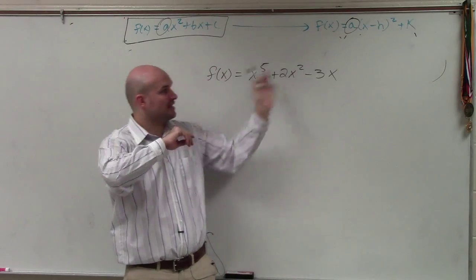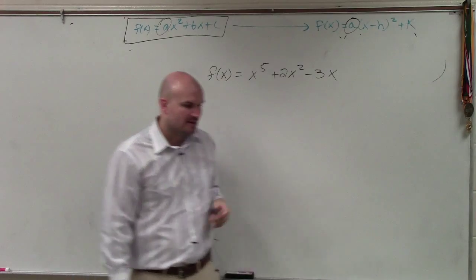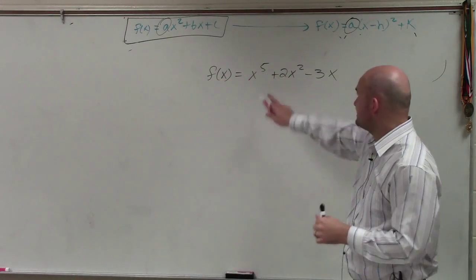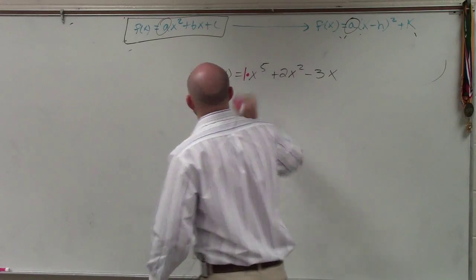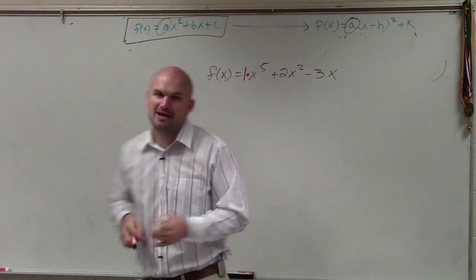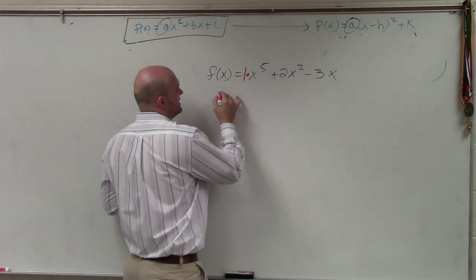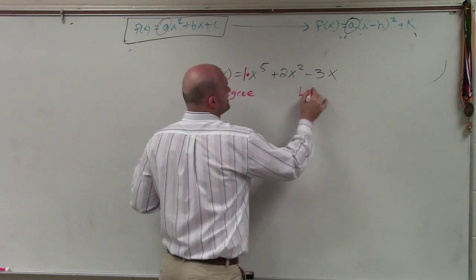So if these were reordered, you'd always make sure that this is in the front. Then of that term that has the highest power, there is a coefficient which we call the leading coefficient, which in this case is 1. So a lot of times when determining end behavior from a polynomial, I like to remind myself, what is the degree and what is the leading coefficient?